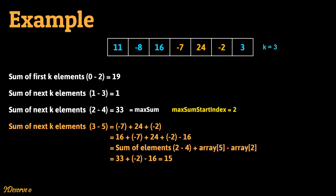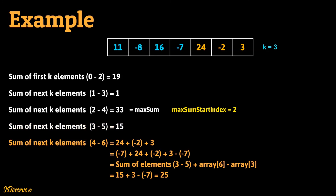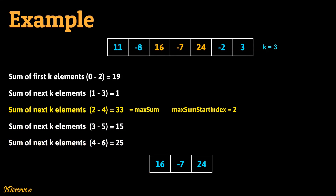Similarly, the sum of the next k elements from index 3 to 5 can be calculated as the sum from index 2 to 4 plus element at index 5 minus element at index 2, which is 15. Since this is not greater than the current max sum of 33, we do not update max sum and max sum start index. Similarly, the sum of the final subarray of size 3 is 25. So finally, the maximum sum subarray of size 3 starts at index 2 and contains elements 16, -7, and 24.